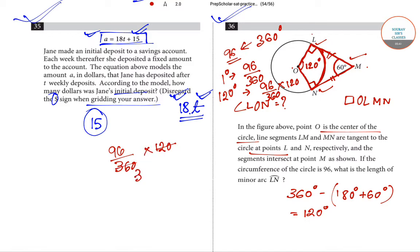This is 96 divided by 3, that is 32. So 32 will be our answer for question number 36.